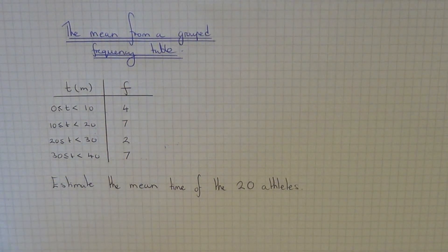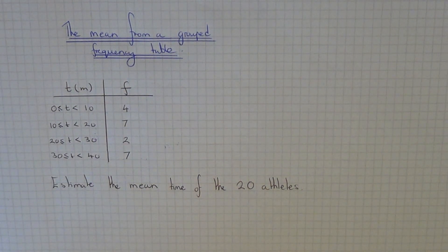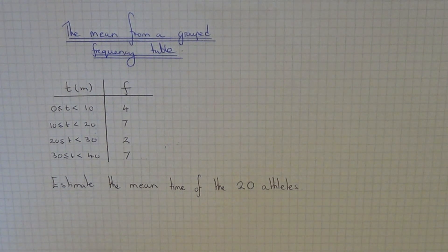Hi, today I'm going to show you how to work out the mean average from a grouped frequency table. The frequency table shows the race times of a group of 20 athletes. You are asked to estimate the mean time of the 20 athletes.